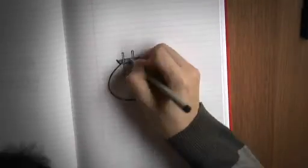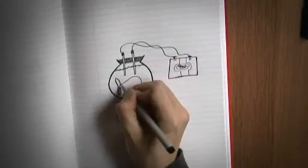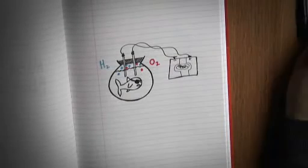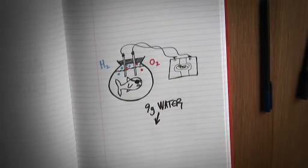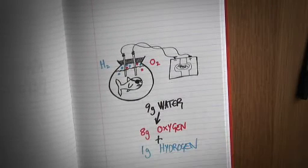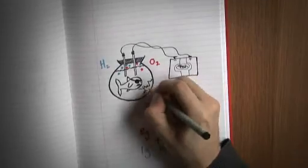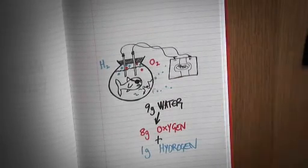Or for example if you were splitting water by electrolysis, if you put in nine grams of water and you got out eight grams of oxygen, you'd expect to get one gram of hydrogen out. So if it got any less then that tells you that some hydrogen must be leaking out and I guess that could be dangerous.